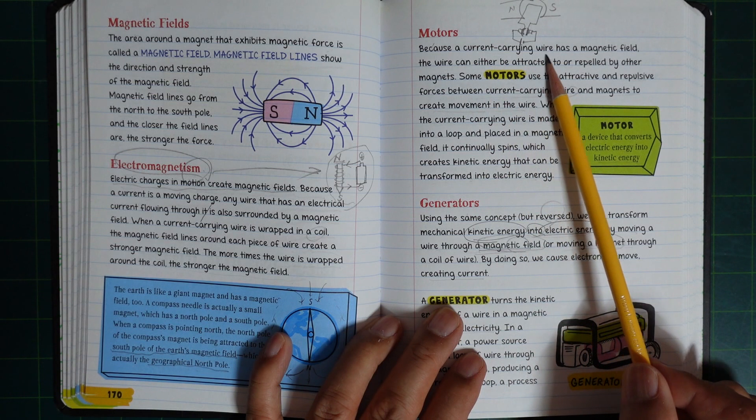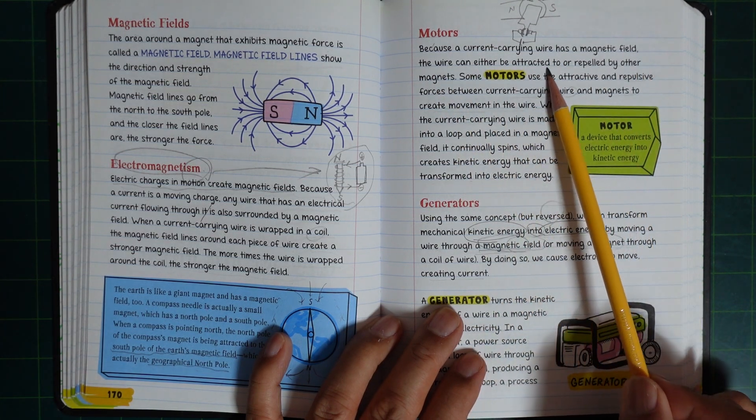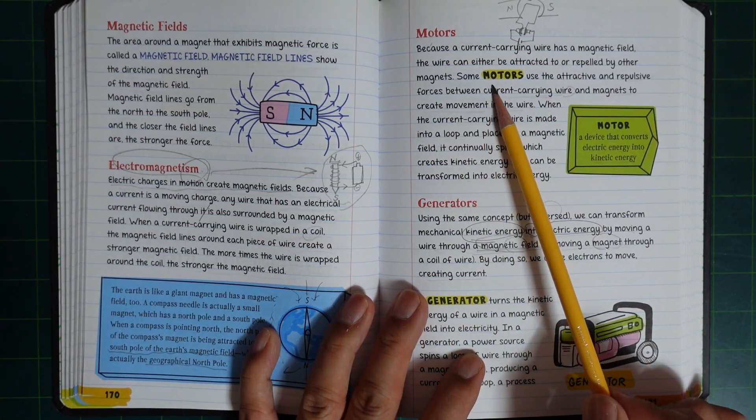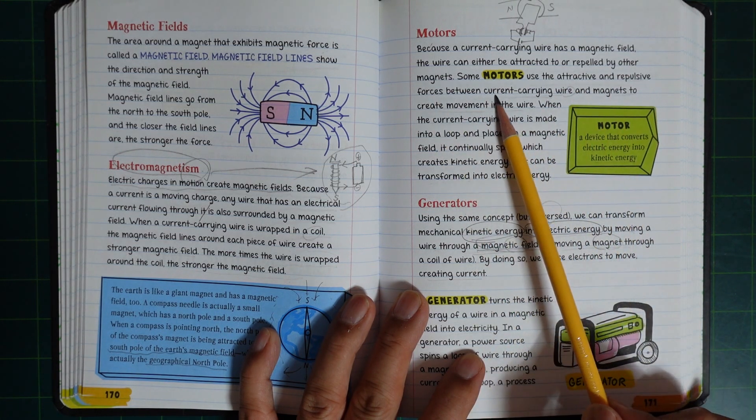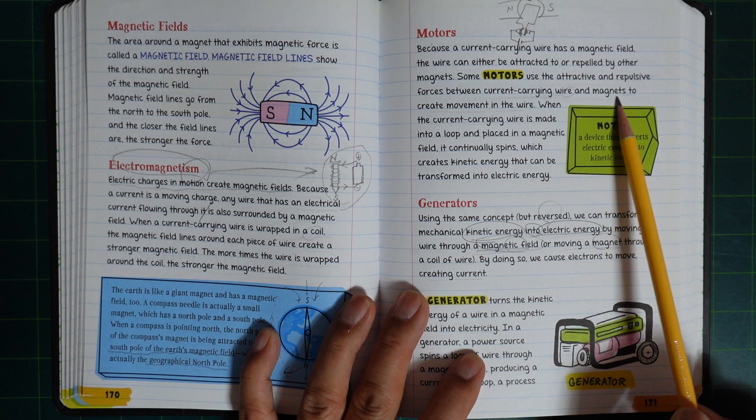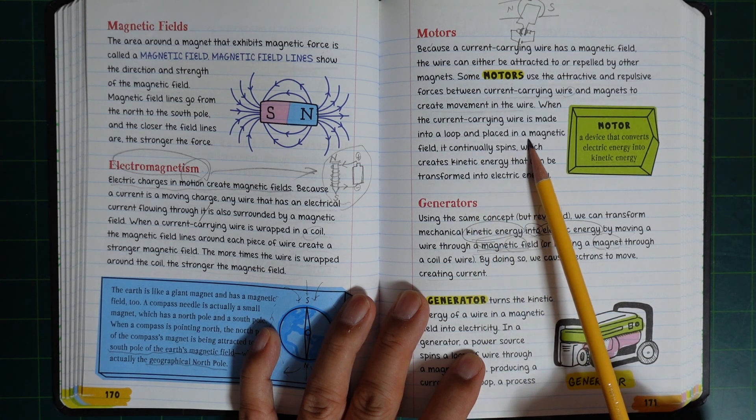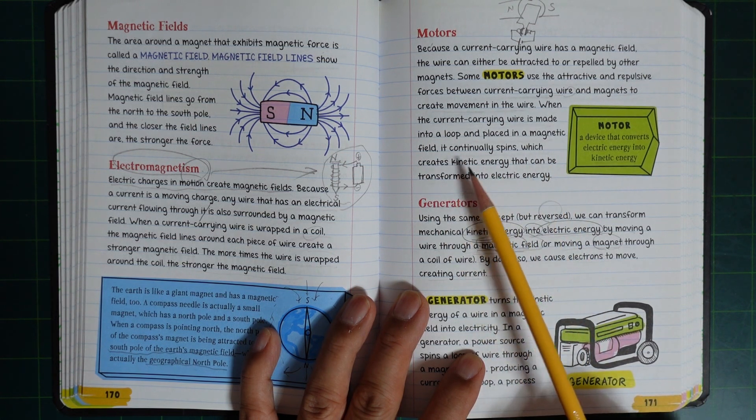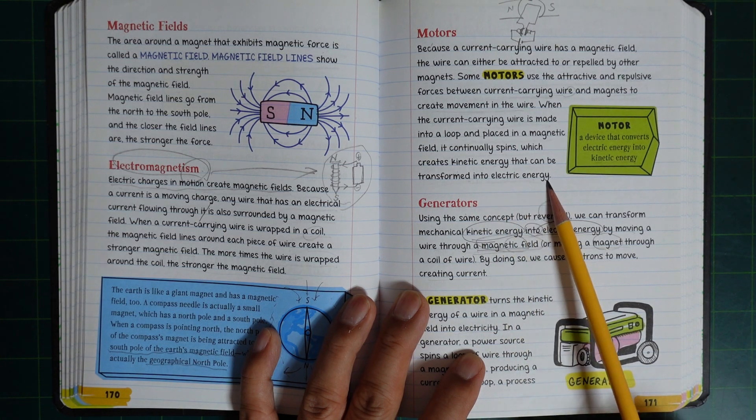Because a current-carrying wire has a magnetic field, the wire can either be attracted to or repelled by other magnets. Some motors use the attractive and repulsive forces between current-carrying wire and magnets to create movement in the wire. When the current-carrying wire is made into a loop and placed in a magnetic field, it continually spins, which creates kinetic energy that can be transformed into electric energy. A motor is a device that converts electric energy into kinetic energy.